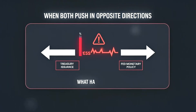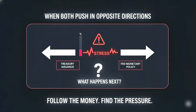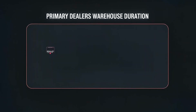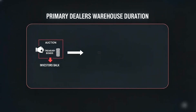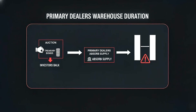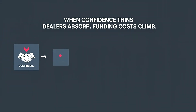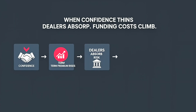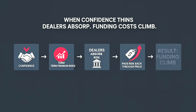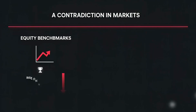Follow the money. Find the pressure. What happens next? Follow the money. Primary dealers — the banks required to bid at treasury auctions — warehouse more duration when investors balk. Auction tail, when demand is weak, shows up as a price gap at issuance. Term premium — the extra yield investors demand for long bonds — rises when confidence thins. Dealers absorb and pass risk back through price. The result: funding costs climb even when policy eases.